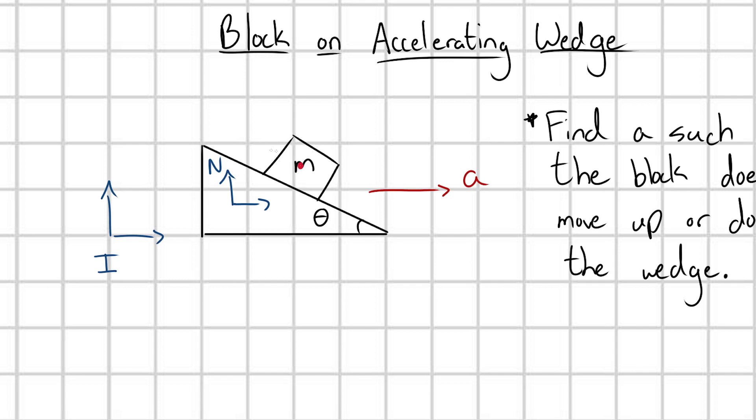So what we're going to need to do is add in an additional fictitious force on our block M, which points in the opposite direction of the acceleration of our frame, and it's going to have a magnitude of M A. That's the fictitious force that you add in a situation of uniform acceleration.